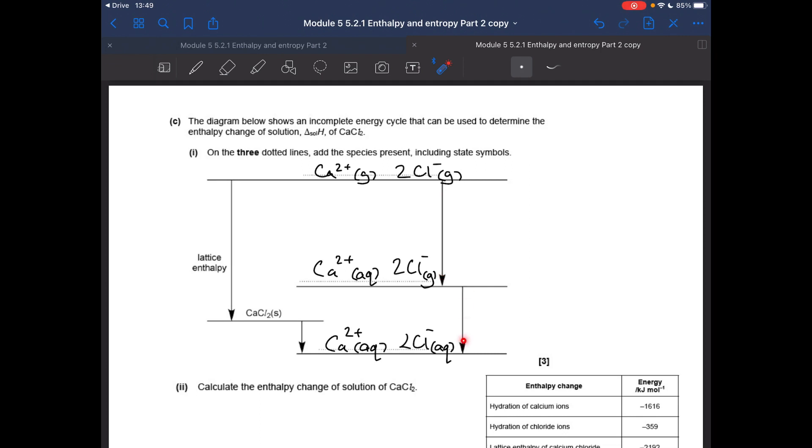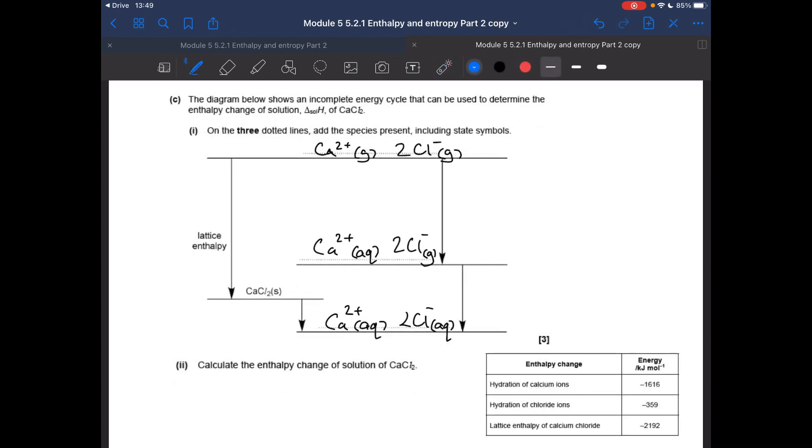Next thing we've got to do is calculate the enthalpy change of solution of CaCl2, so that's the unknown thing there. So I'm going to put in the lattice enthalpy, minus 2,192.